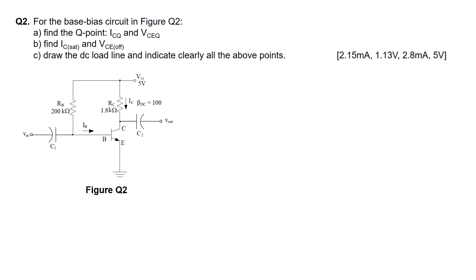So let's look at part A. To start with finding ICQ, we have to remove the capacitors C1 as well as C2, because ICQ and VCEQ are DC parameters. After removing the two capacitors C1 and C2, the current IB is actually originating from VCC. The base current will travel through the base terminal, through the BE junction, and then to ground.